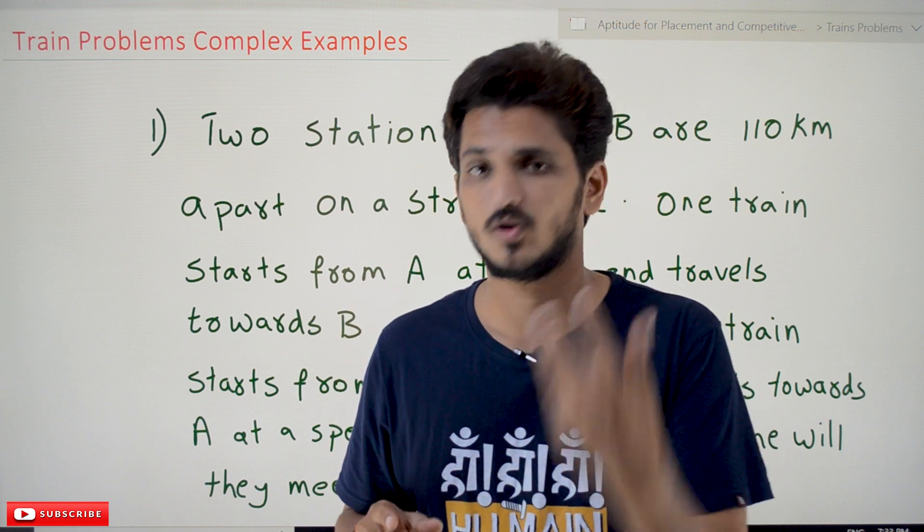Coming to the second example: train X starts from M at 4 pm and reaches G at 5 pm, meaning it traveled one hour to cover the full distance. Another train Y starts from G at 4 pm and reaches M at 5:30 pm. Here they have provided time rather than speed. The question asks: at what time will the two trains cross each other?